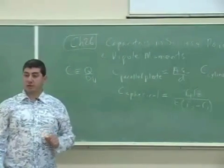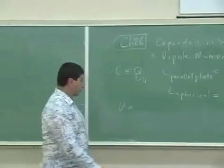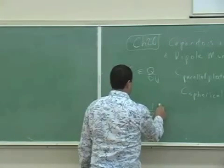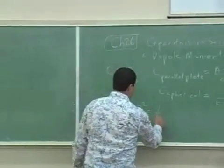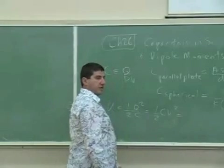Then we talked about the energy that the capacitor stores: one half Q squared over C, and then we saw it has different forms, one half CV squared.